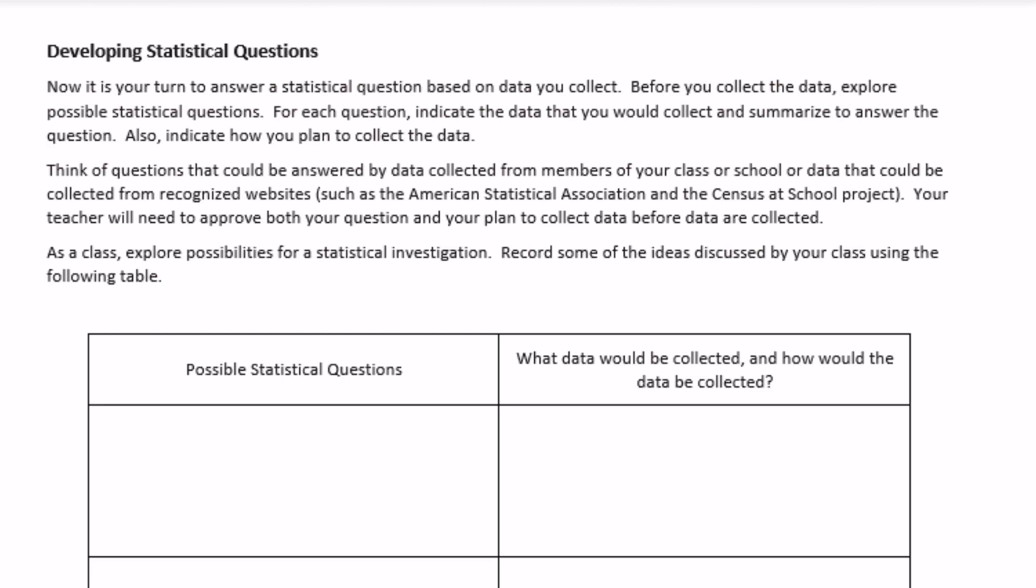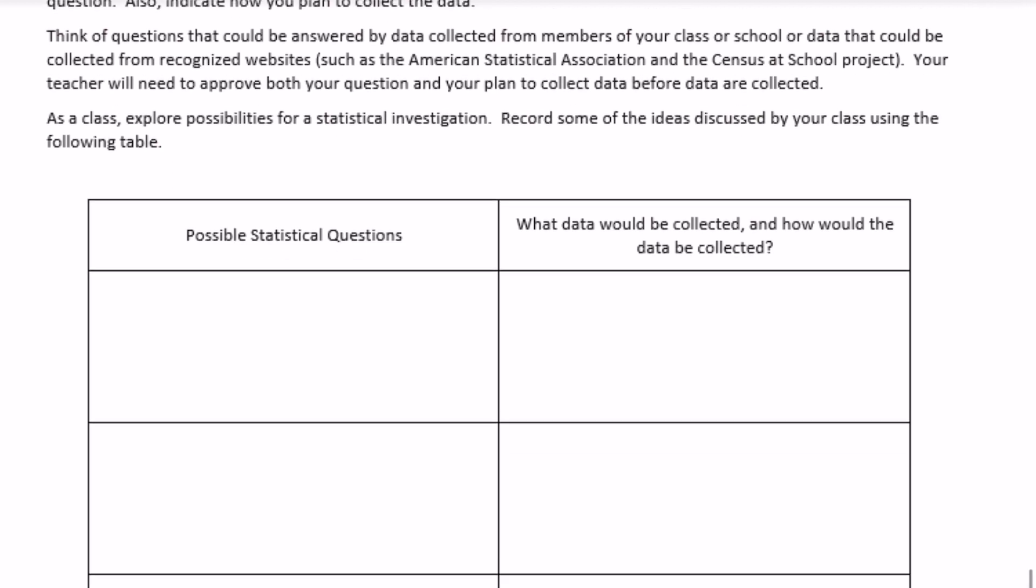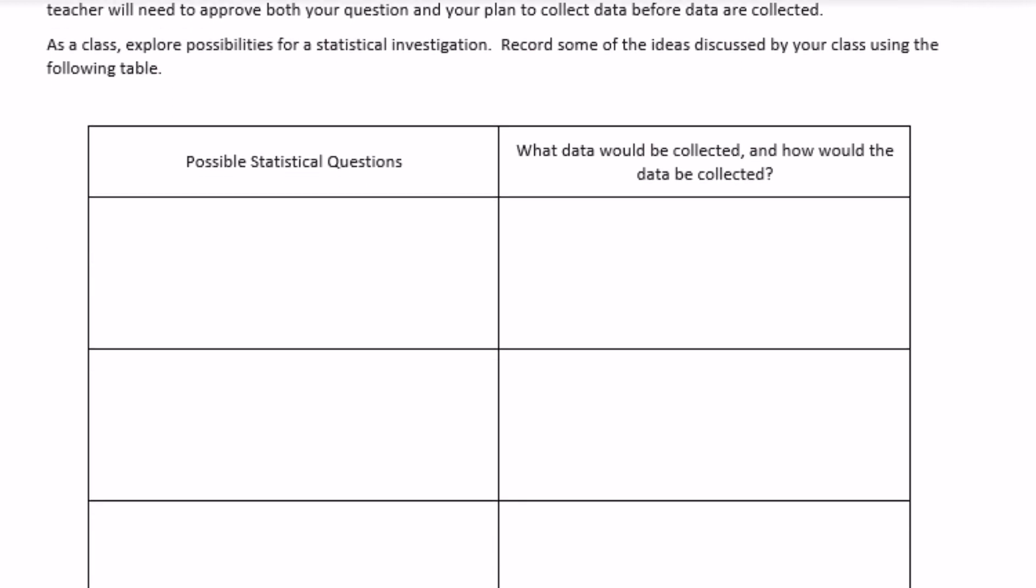Alright, developing statistical questions. Now it's your turn to answer a statistical question based on data you collect. Before you collect the data, explore possible statistical questions. For each question indicate the data that you would collect and summarize to answer the question. Also indicate how you plan to collect the data. Think of questions that could be answered by data collected from members of your class or school, or data that could be collected from recognized websites such as the American Statistical Association and the Census at School project. Your teacher will need to approve both your question and your plan to collect data before data are collected. As a class, explore possibilities for statistical investigation. Record some of the ideas discussed by your class using the following table.